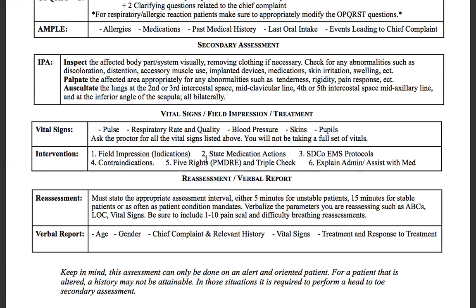Once you've performed the intervention, reassess. At Miramar College, you'll reassess every five minutes because all tested patients will be unstable. There are two intervals: five minutes for unstable patients and 15 minutes for stable patients — but more importantly, reassess as often as the patient's condition mandates. Verbalize the parameters you're reassessing: airway, breathing, circulation, level of consciousness, and vital signs. If you used a one-to-ten pain or difficulty breathing scale, have them re-rate it again.